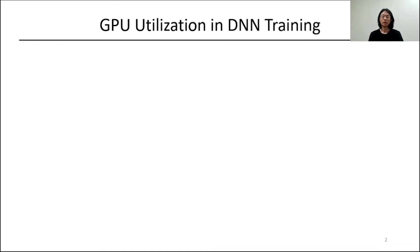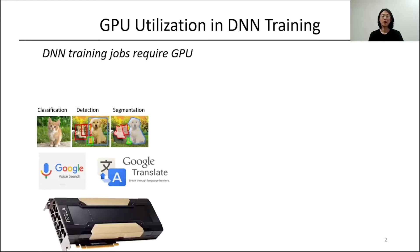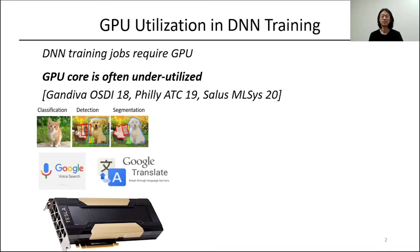Deep neural networks are widely adopted and becoming one of the most dominant workloads. DNN workloads run on hardware accelerators such as GPUs. It is already known that some DNN models underutilize GPU compute resources. For instance, Microsoft's production GPU cluster Philly has only 65% GPU compute utilization for DNN training jobs using one GPU.